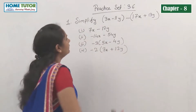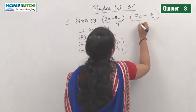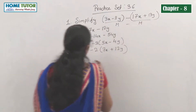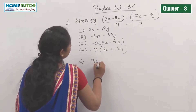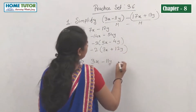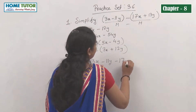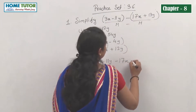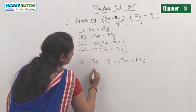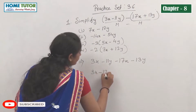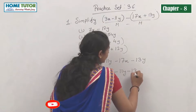Here we have a monomial subtracted from a monomial, so let's solve this. We open the bracket: 3x minus 11y, then minus plus gives minus 17x, and minus plus gives minus 13y. Now take the like terms together: 3x minus 17x, and minus 11y minus 13y.